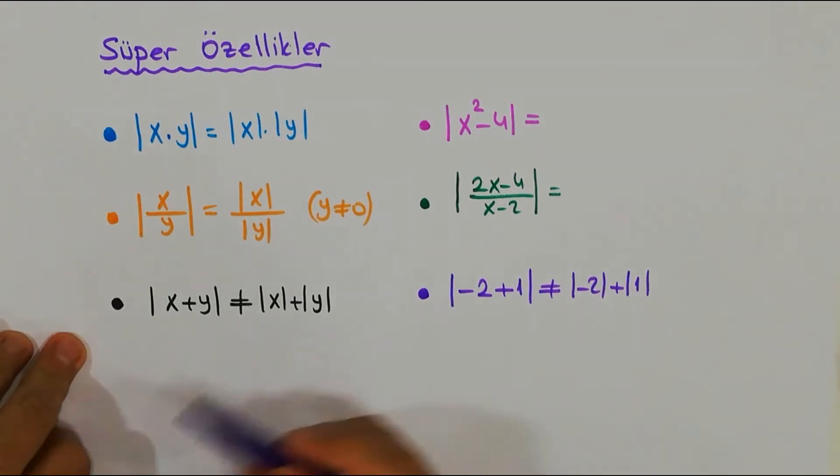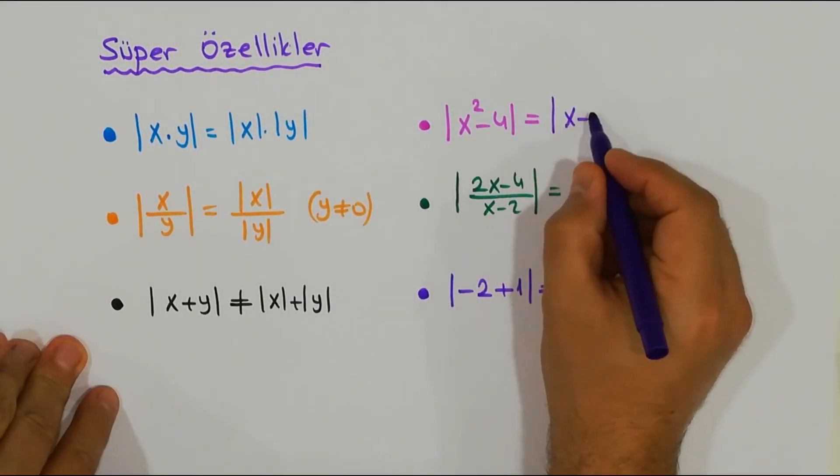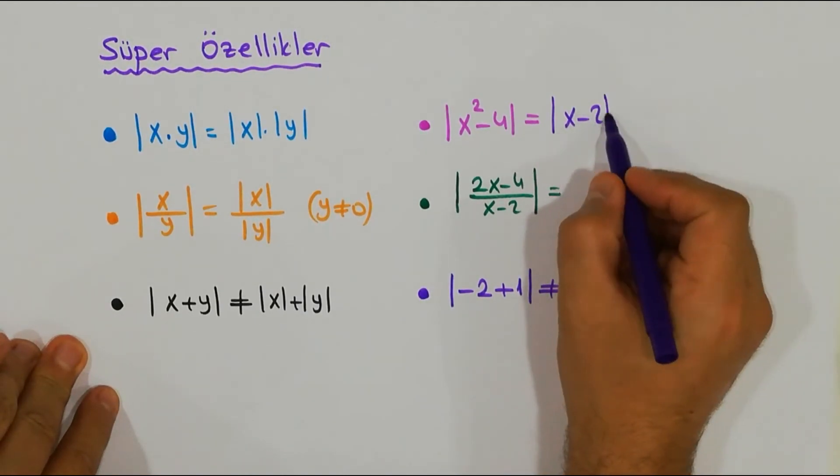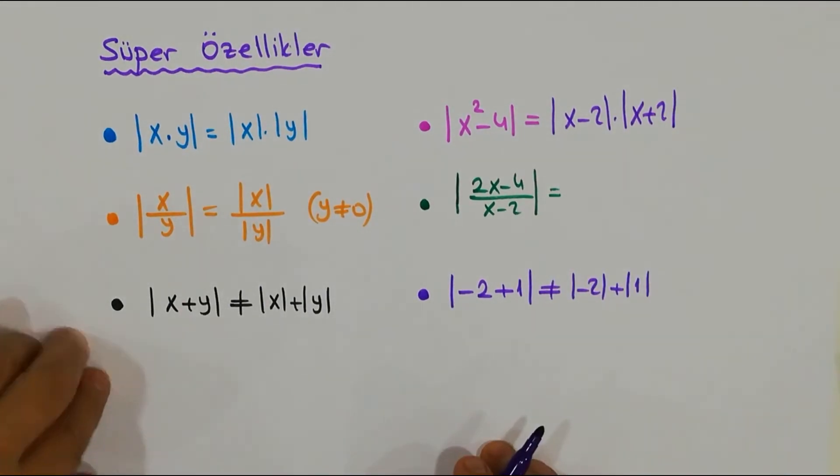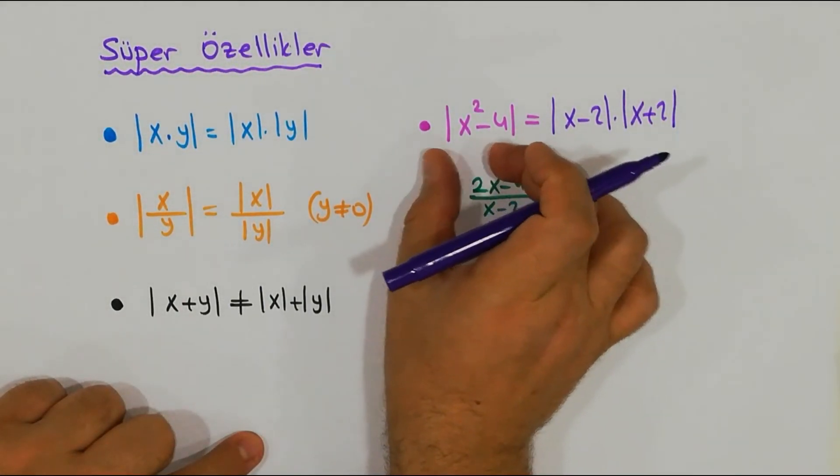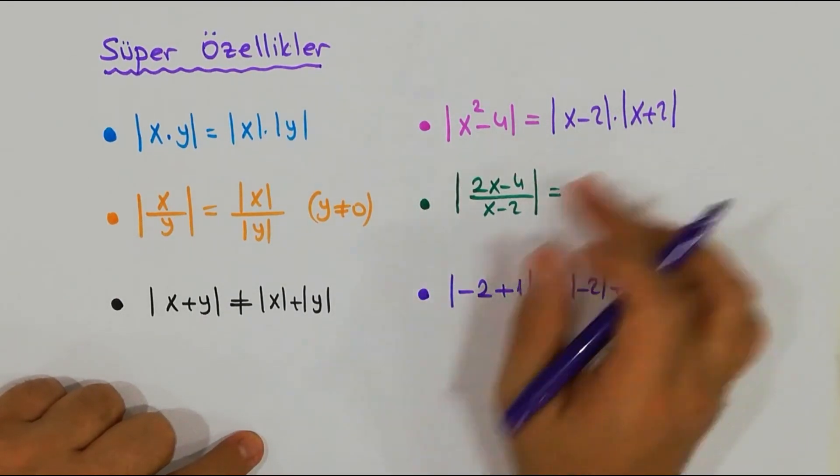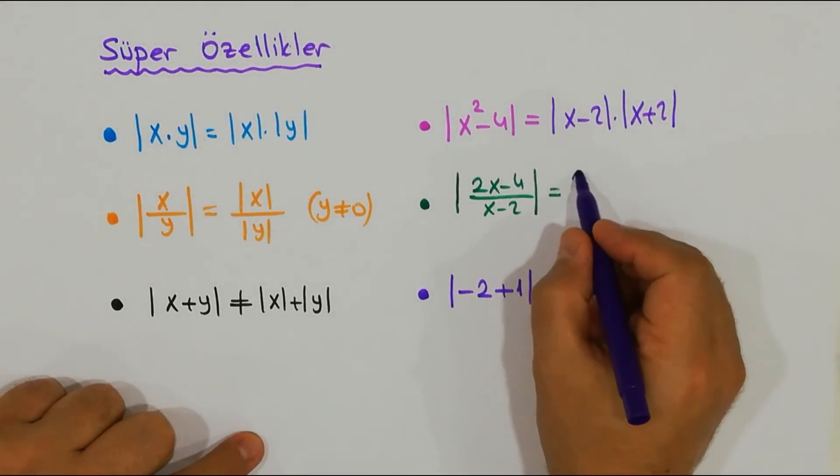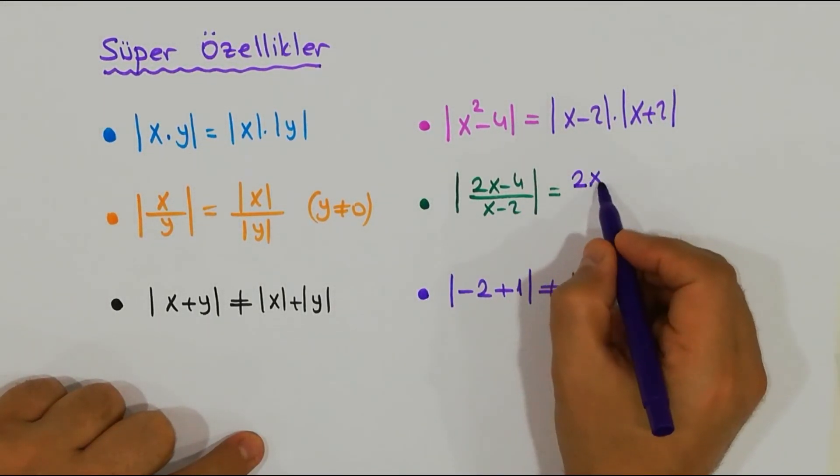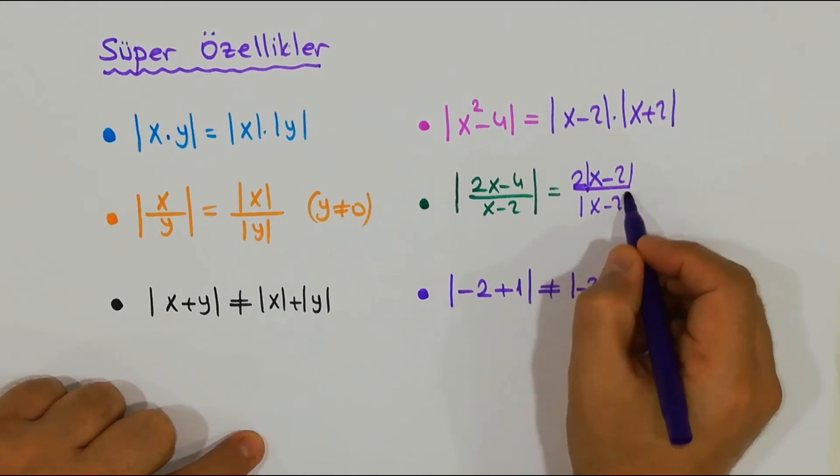Peki bu soruyu o çerçevede yapalım isterseniz. Şöyle, şimdi x² - 4'ü biz biliyoruz aslında (x - 2)(x + 2)'dir değil mi? Ben bunu hiç paranteze ihtiyaç duymadan bakın ayrı ayrı düşünebiliyorum. Yani bu x - 2 çarpı x + 2 aslında ama ben bunu |x - 2| çarpı |x + 2| diye kesinlikle söylerim. Peki bu bitti, burada yukarıda ben bunu hem 2 parantezine alıyorum, 2'yi dışarı alıyorum, hem de bunu ayrı ayrı yazıyorum.